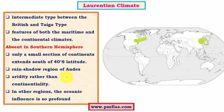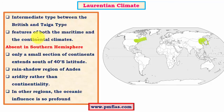The Laurentian type is an intermediate type of climatic region between the British type and the taiga type. The British type indicates a moderate climate, while the taiga type indicates an extreme climate with severe winters. In the Laurentian type, summers are very warm whereas winters are much cooler than the British type but less severe than the taiga type.